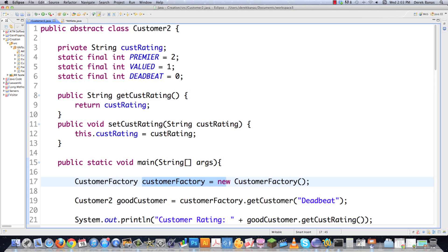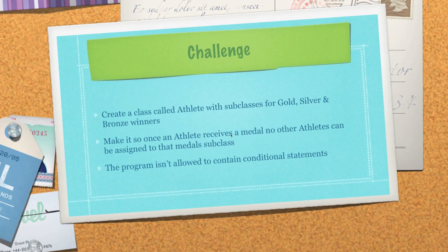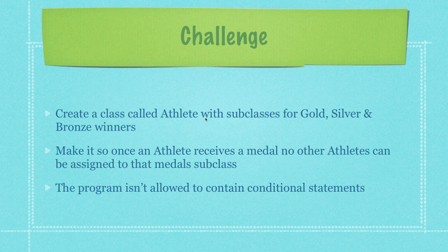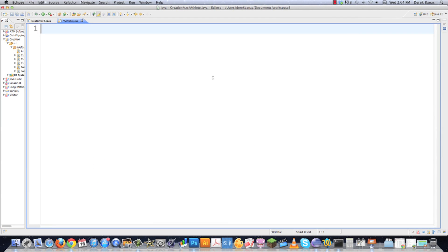Now let's solve Emil's problem. The requirements: create an Athlete class with subclasses for gold, silver, and bronze winners; once an athlete receives a medal, no other athlete can be assigned to that medal subclass; and no conditional statements. The no-conditionals part I know how to solve. The 'only one instance ever' constraint — that means singleton. That's the singleton pattern. If you haven't seen my factory or singleton design pattern tutorials, I provide links above. Let's start writing code.